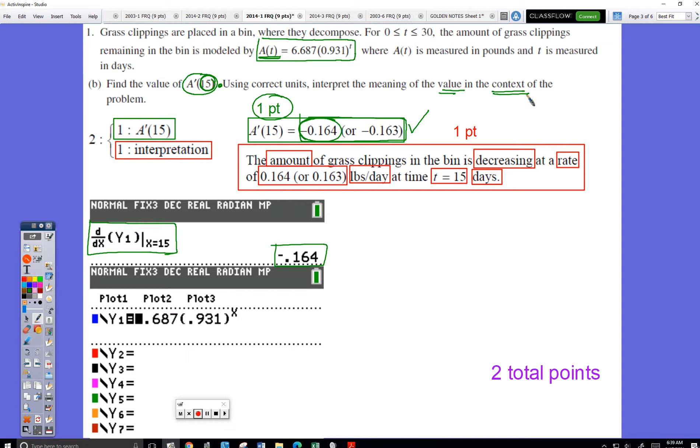Okay, so key things. This is telling me the rate at which the amount of grass clippings is decreasing, because this is a negative. So I need to write that down somehow.